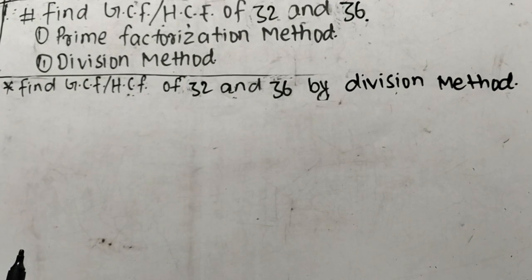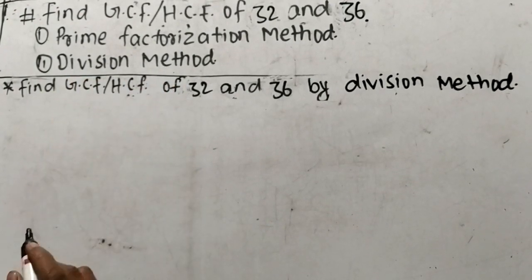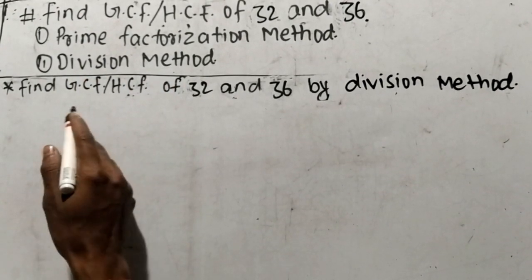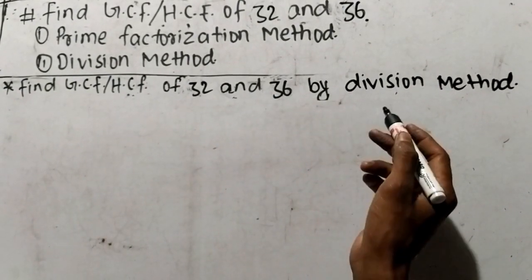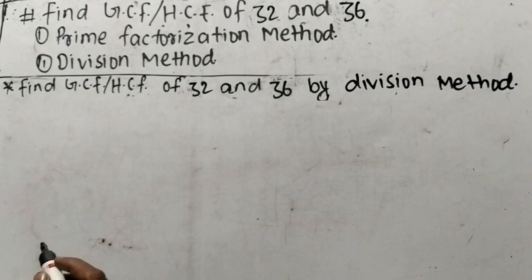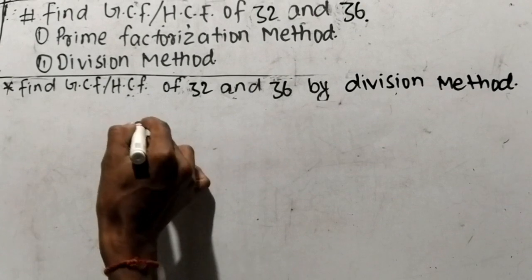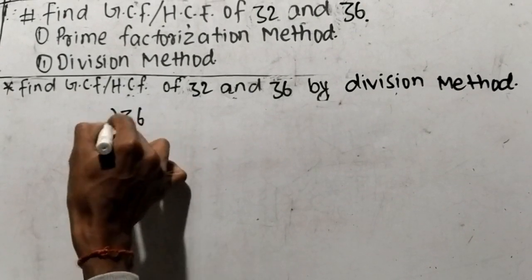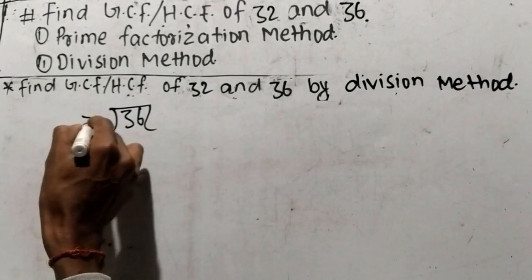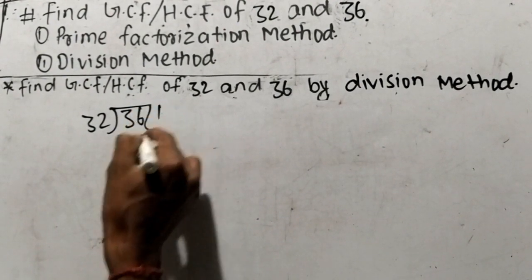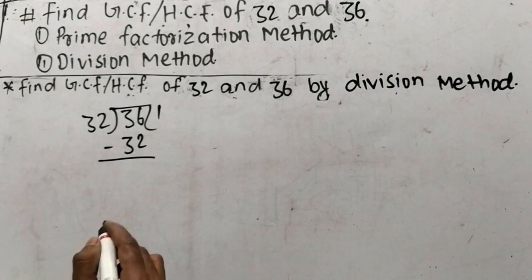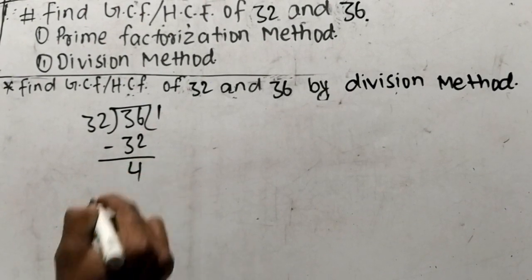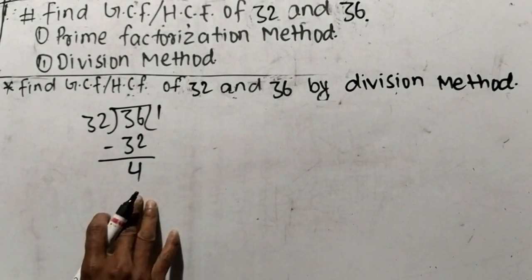Our second method is by division method. So let's find out GCF or HCF of 32 and 36 by division method. While finding out GCF or HCF by division method, we have to divide the greater number which is 36 with the lesser number which is 32. So 32 times 1 means 32, and 36 minus 32 means 4. So here 4 comes as remainder.